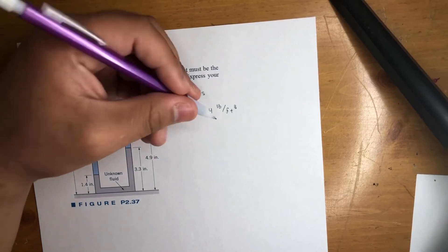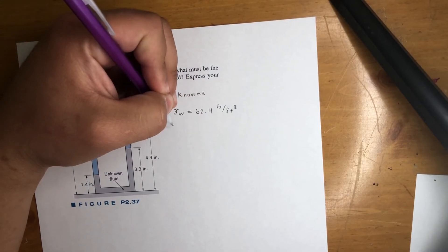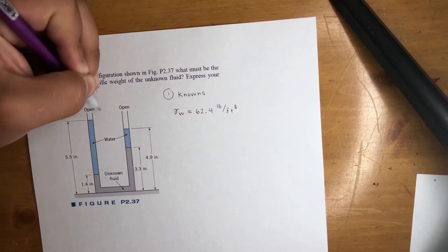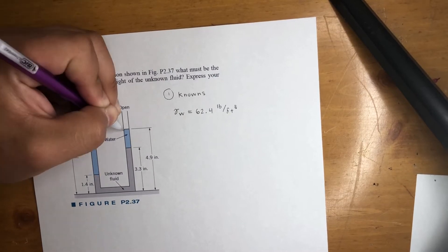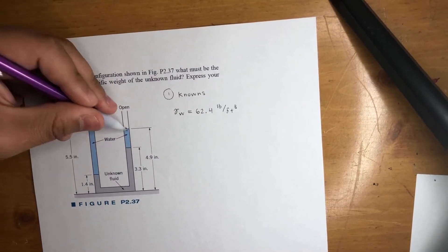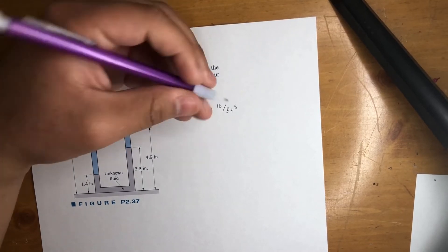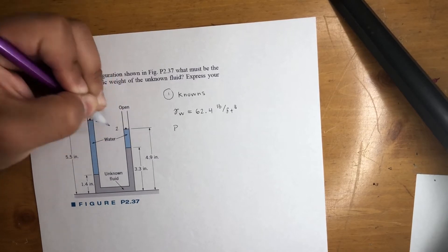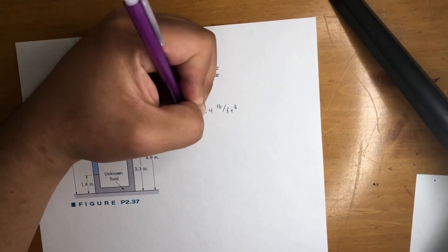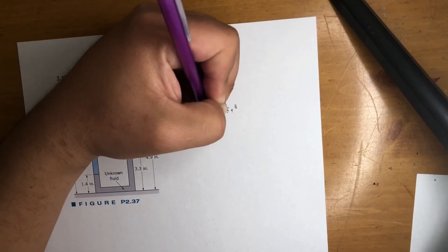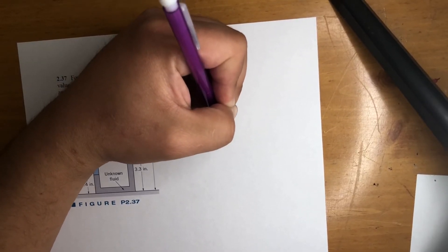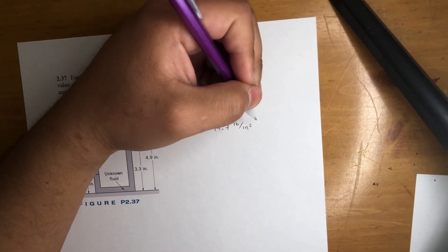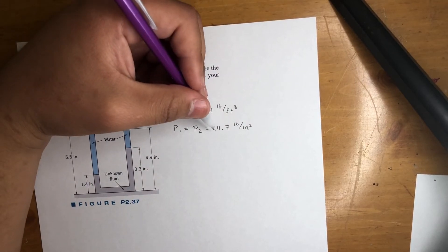That is 62.4 pounds per feet cubed. So we're looking for the specific weight, gamma f, of the fluid. But hold on, let's go one step at a time with our knowns. We know the pressure at these two points up top is atmospheric pressure. It's open, so let's label this point 1, this point 2. So p1 is equal to p2, and that is 14.7 pounds per square inch.